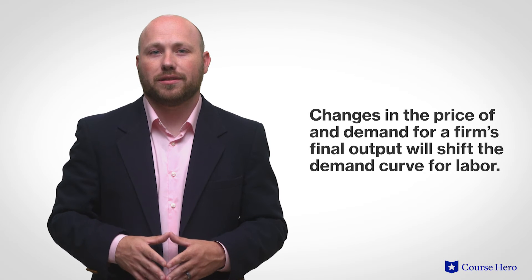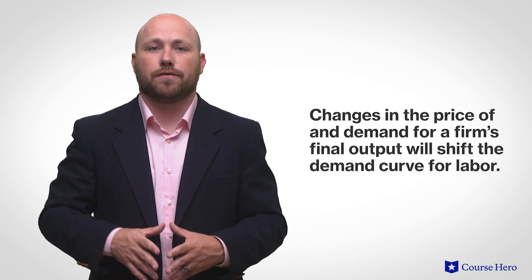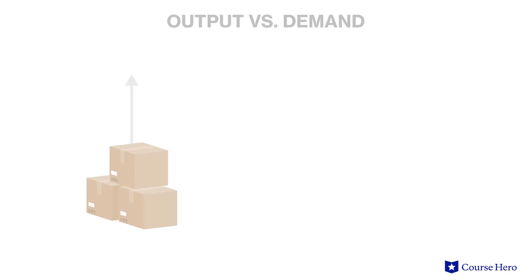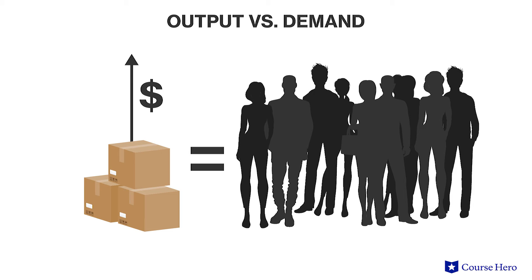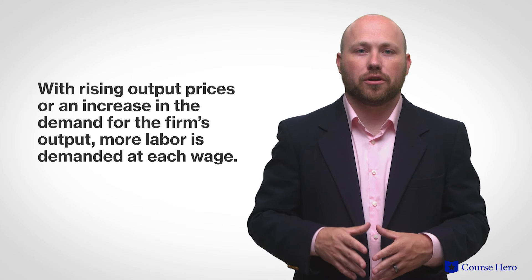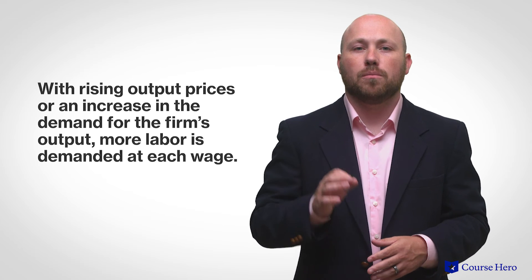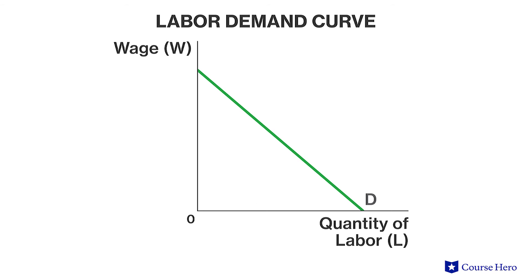Changes in the price of and demand for a firm's final output will shift the demand curve for labor. If the demand for a firm's output increases, the output price increases, and the firm can increase revenue if it sells more output. In order to sell more, it must first hire more labor to produce and sell the additional output. With rising output prices or an increase in the demand for the firm's output, more labor is demanded at each wage, shown graphically as a shift in the labor demand curve to the right.